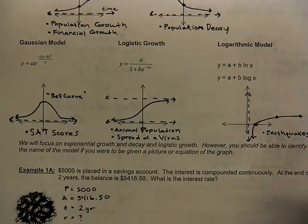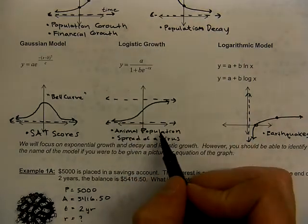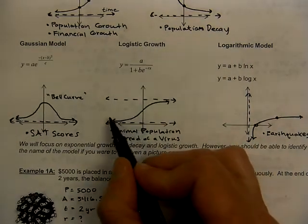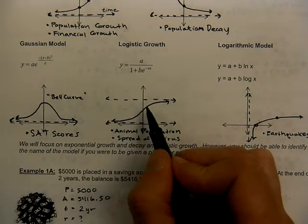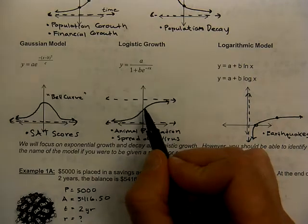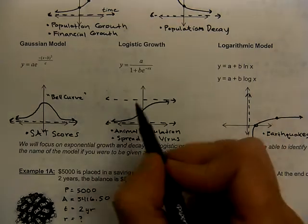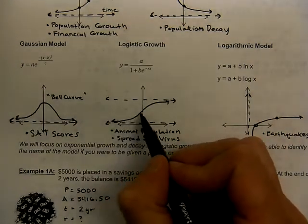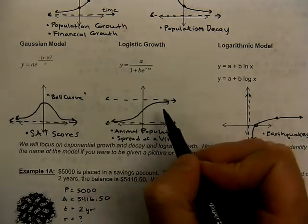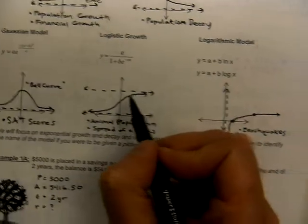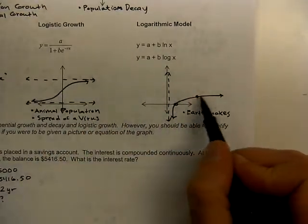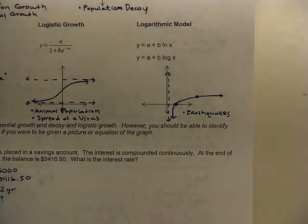For example, as opposed to the population growth that we saw earlier, here we have animal population. Imagine you have a herd of deer that live in the forest, and they will continue to grow as long as they have food to find. But if they eat all the bushes or if there's a drought, then all of a sudden they don't grow anymore. They've met their maximum cap. Same with the spread of a virus. As long as there's bodies to infect, that virus can spread, but it won't spread beyond the number of bodies that it can inhabit. And then back to our logarithm, we see this in instances like dealing with earthquakes and measuring the Richter scale.